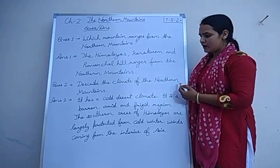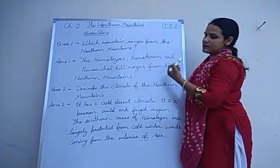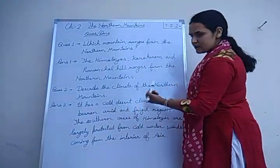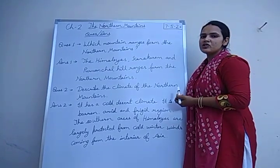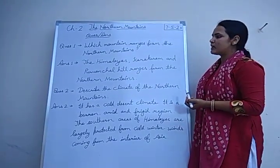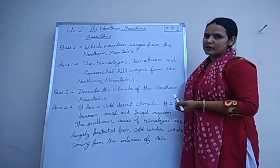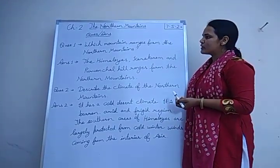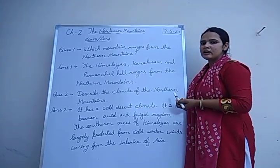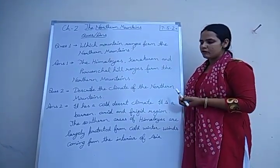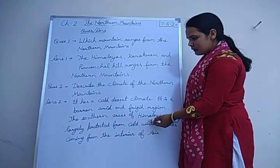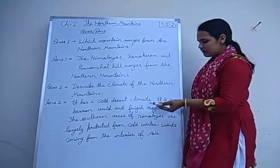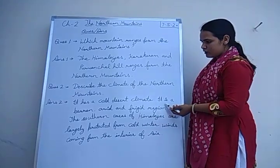In the middle Himalaya range, there is a pleasant climate with summers around 17 degrees Celsius. The outer Himalaya is not as cold as the middle or greater Himalaya, but receives heavy rainfall. We have written the overall climate of the northern mountains rather than the climate of each individual range.